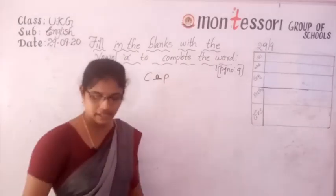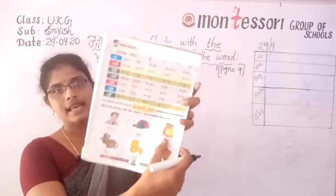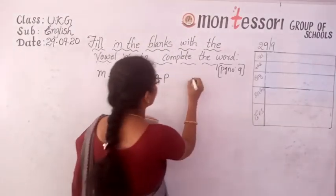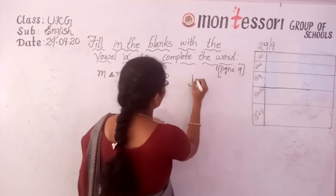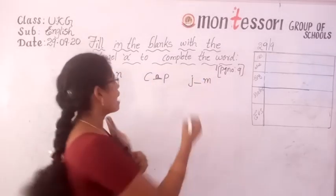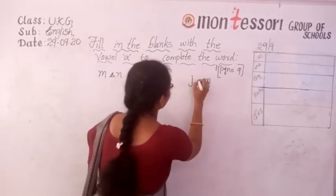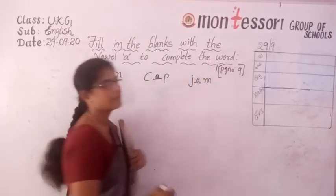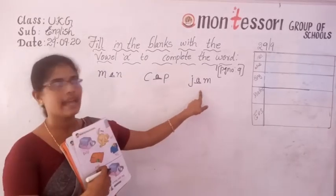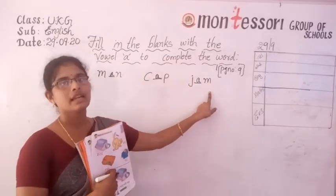Now next picture — there is an apple jam bottle. Below that, what they have given? J-dash-M. We have to fill in the vowel A. After filling in the letter A, what does this word become? J-A-M, jam.